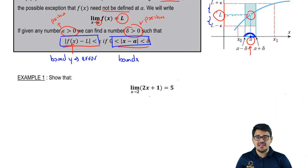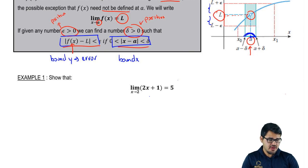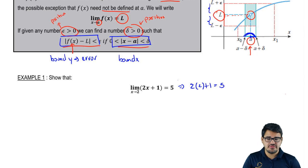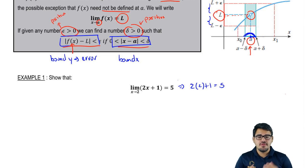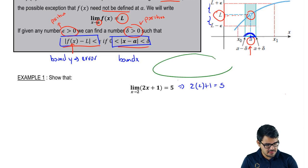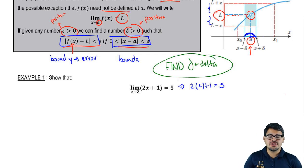Let's jump into an example. It tells us: show that the limit as x approaches 2 of 2x plus 1 is equal to 5. Now when we're computing limits we'd just input the number — 2 times 2 plus 1 equals 5 — and that feels like enough. But no, they don't want you to just input the number. They want you to use all these restrictions and prove that you can find a delta. So let's put that in green: our goal is to find delta. We're actually going to find delta.